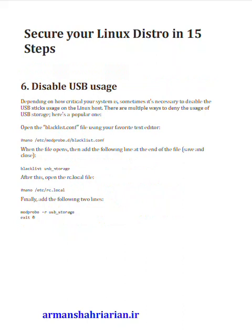Step 6: Disable USB usage. Depending on how critical your system is, sometimes it's necessary to disable USB stick usage on the Linux host. There are multiple ways to deny USB storage usage. Here's a popular one: open the blacklist.conf file — nano /etc/modprobe.d/blacklist.conf. When the file opens, add the following line at the end of the file, save and close: blacklist usb_storage.